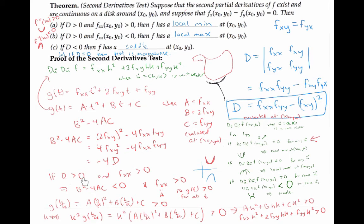The case when D > 0 and f_xx < 0 is very similar. We switch both inequalities: b² − 4ac < 0 still holds, but now the leading coefficient a is negative, so the parabola points downward with no real zeros. Therefore g(t) < 0 for all t, giving g(h/k) < 0, and the same calculation shows D_u(D_u f) is always negative. So we are in the second situation, corresponding to a local maximum.